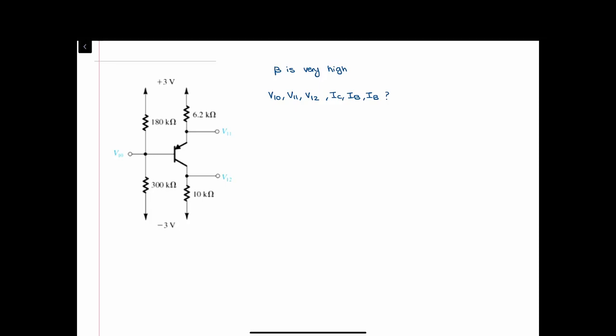Hello everyone. In this video we want to solve a question involving a BJT in a circuit. What we want to find is V10, V11, and V12, as well as I-collector, I-base, and I-emitter.